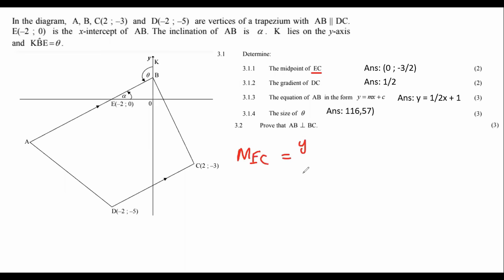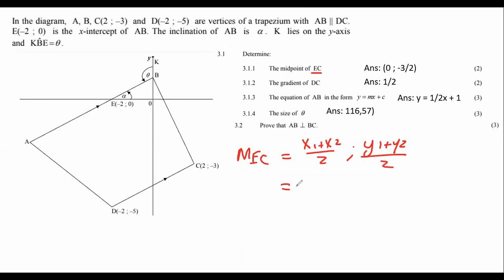We use the midpoint formula: x1 plus x2 over 2. If you work out the midpoint, you're going to get 0 and negative 3 over 2. So (0, -3/2) is the midpoint.